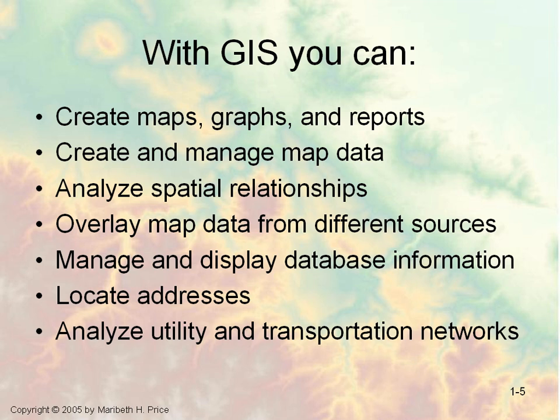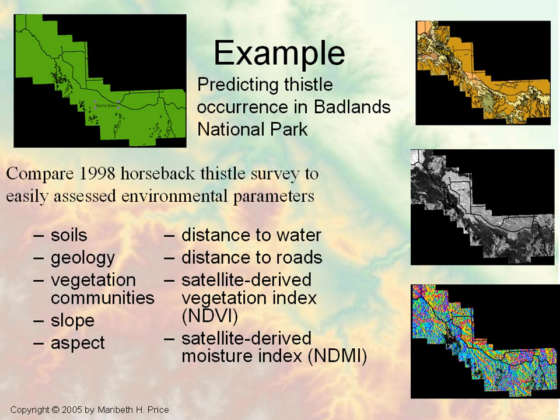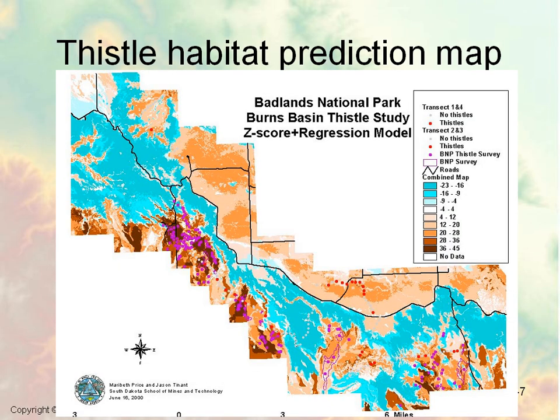So, what kind of things can you do with GIS? This is an example of how you can predict thistle occurrence in Badlands National Park. With this example, they know what kinds of soils and geology, vegetative communities, slope, aspect, and distance to water contribute to where thistle may grow. From that, they've developed a prediction map of where thistle is likely to grow. That's a more complex example than our sports arena example of locating a commercial property within a distance to a sporting arena.